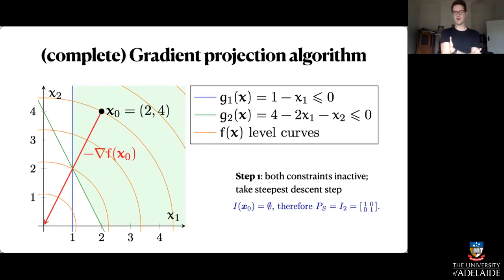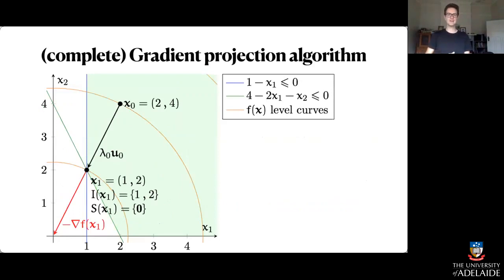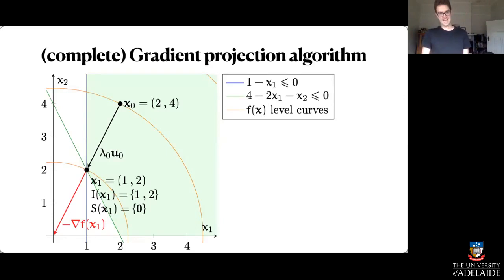If we were doing unconstrained optimization, we would go towards the global minimizer in exactly one step, because we're pointing directly towards the origin. But because we're doing constrained optimization, we have to stop once we hit our constraints. We find the gamma that minimizes the cost function along this line, but lambda has to be such that we don't step outside of the feasible region. Here we actually hit the intersection of our two constraints — so after x1, both constraint one and constraint two are active.